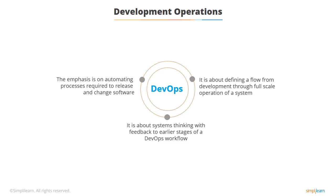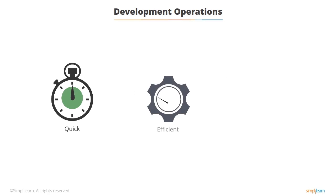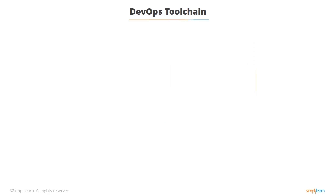Great importance is placed on automating the process. We don't want to do things manually anymore. We want everything to be fast, totally automated and reliable. The whole process of DevOps is to use automation and different tools to do the operations.